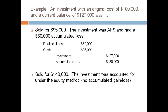If the investment was accounted for under the equity method, there is no accumulated gain/loss account. Follow the steps: record the cash and remove the investment at the current balance. The journal entry does not balance, so balance the entry with a credit to realized gain.